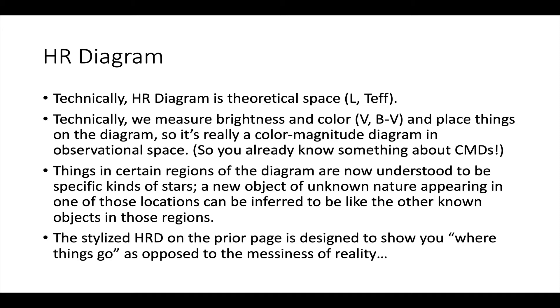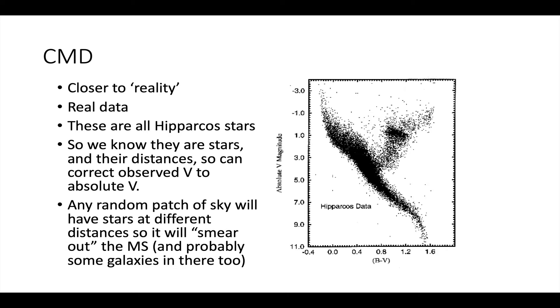This HR diagram is really kind of a cartoon. It's not reality. It's sort of cleaned up to show you the main points. This is a real color-magnitude diagram. So this is data from Hipparcos, which was a European satellite that studied distances to nearby stars, relatively nearby stars.